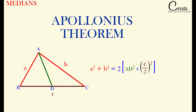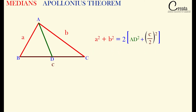If we take a triangle with sides a, b, and c, and AD as a median, the relation will be: a² + b² = 2(AD² + (c/2)²). Here AD is the median, and we have taken two sides a and b — the median AD is between these two sides only.